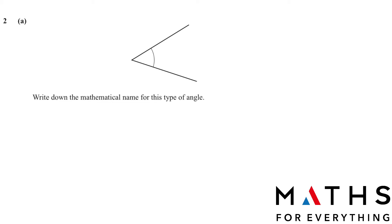Question number 2a. Write down the mathematical name for this type of angle. We know that there are three types of angle. If it is 90 degrees, it is a right angle. If it is less than 90 degrees, then it is an acute angle. And if it is more than 90 degrees, it is an obtuse angle. So from the diagram we can see that this is an acute angle.